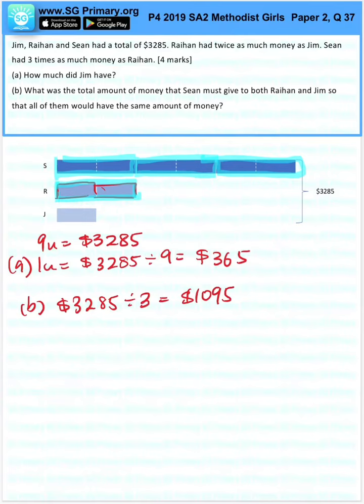So let's see how much Raihan needs. We first need to take 365 times 2 which is $730. Two units.